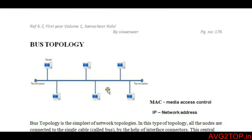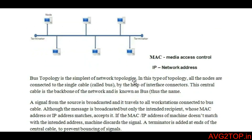Bus topology is the arrangement of computers connected with one single cable. The nodes are the computers, so here there are six computers connected with one cable. That single cable is known as the bus. If this is a source and this is the destination, there are six computers here.